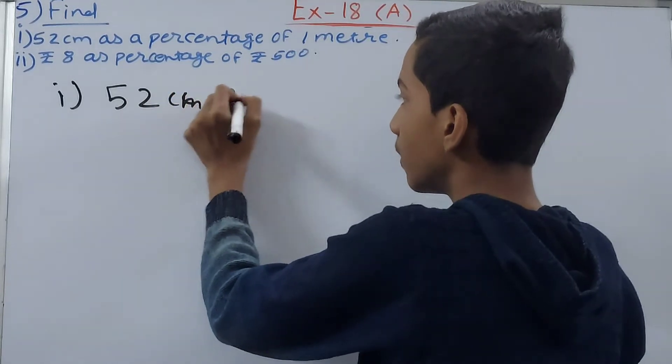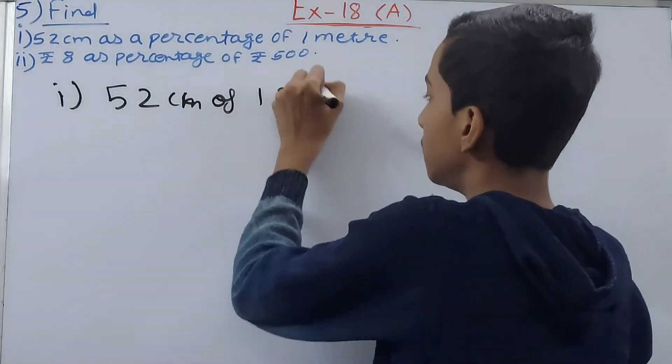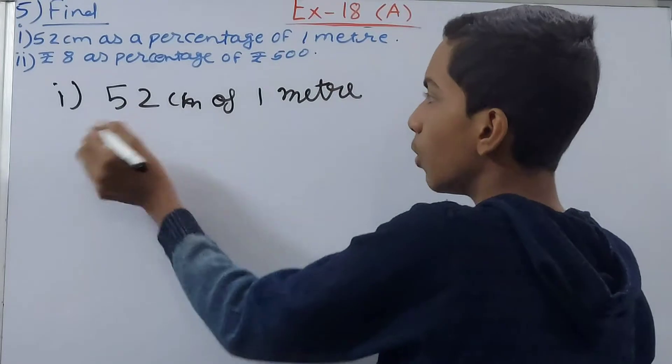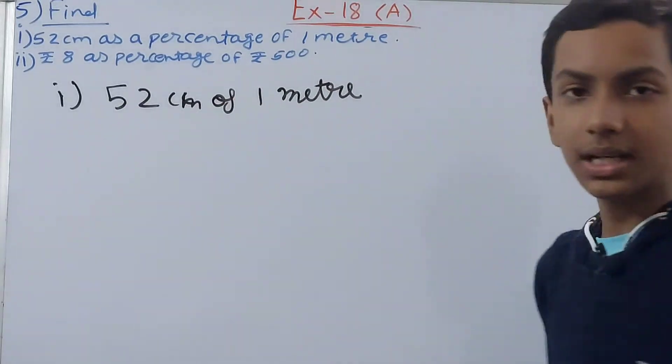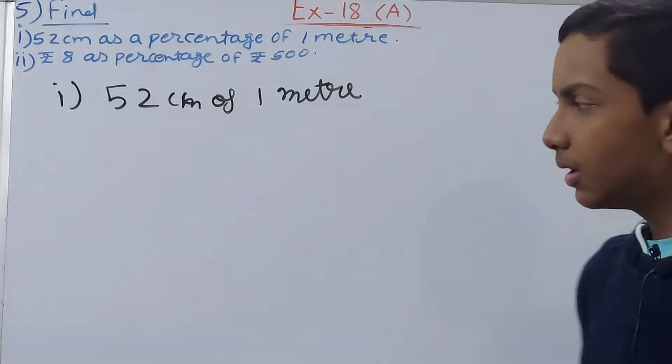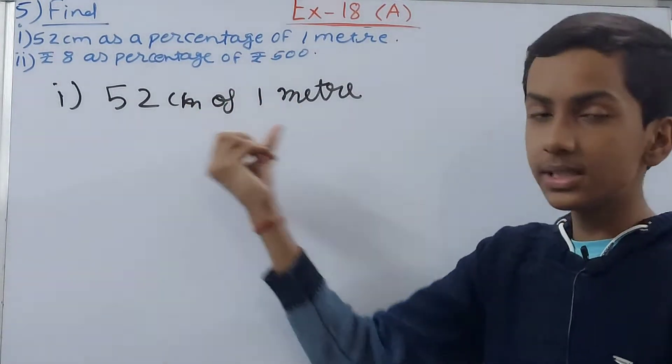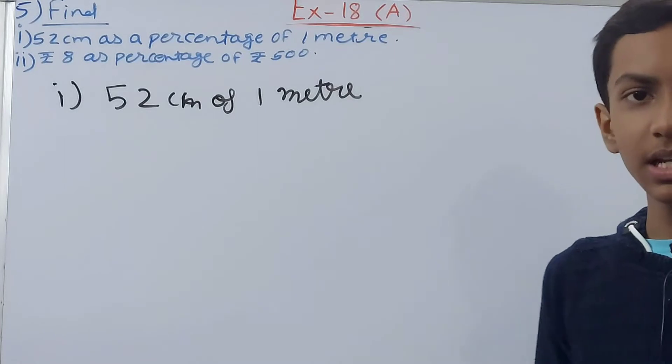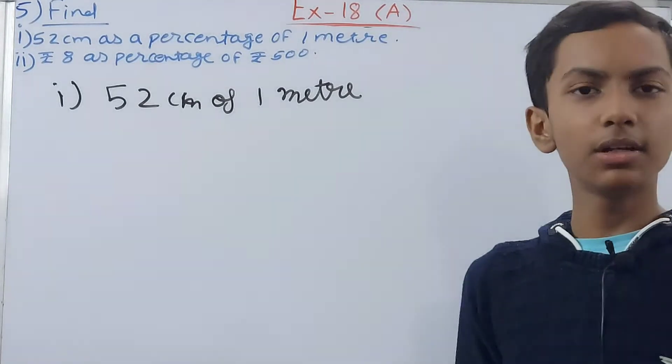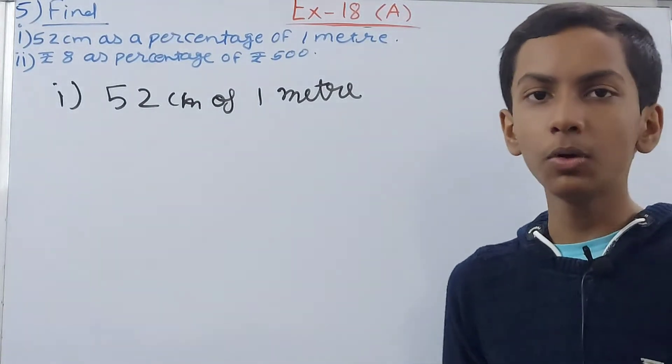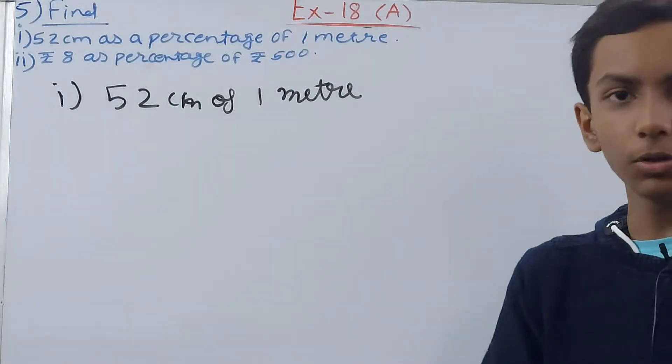Always and always see that the units are the same. 52 upon 100 it will be, why? Because 1 meter is in meters and 52 is in centimeters. So one is in centimeters and the other is in meters, so that cannot be possible. We have to have one same unit for both of our quantities.